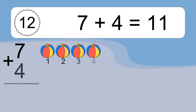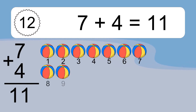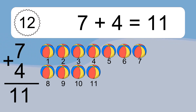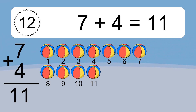7 plus 4 equals 11. Let's count it: 1, 2, 3, 4, 5, 6, 7, 8, 9, 10, 11.